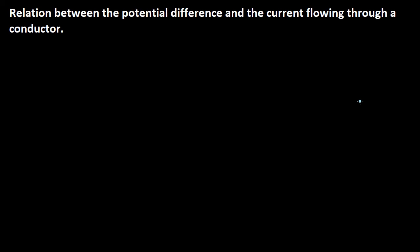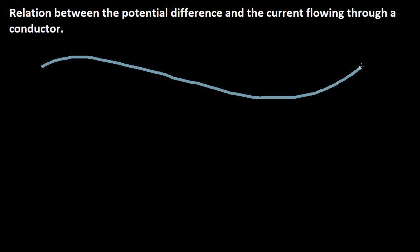Hello and welcome to another exciting class of physics. Today we are discussing the relation between potential difference and the current flowing through a conductor. Let us try to understand this with the help of an illustration. Suppose we have a conducting wire made up of copper, and these are the ends of the wire.